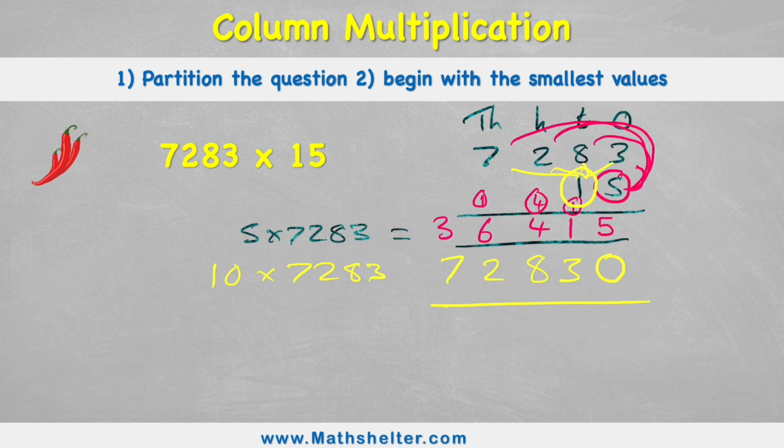Am I finished? Not yet, because now I've just got my two partitioned answers. I'm now needing to put it back together by adding them to get a final answer. 5 add 0 is 5, 1 add 3 is 4, 4 add 8 is 12, 6 add 2 plus my 1 is 9, 3 add 7 is 10. So my answer is 109,245.